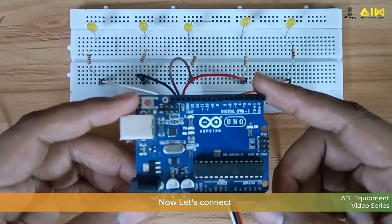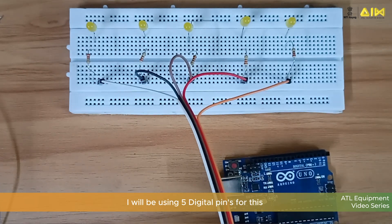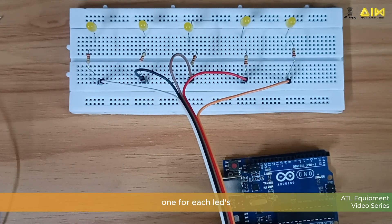Now, let's connect the Arduino Uno to the LEDs. I will be using 5 digital pins for this, one for each LED.